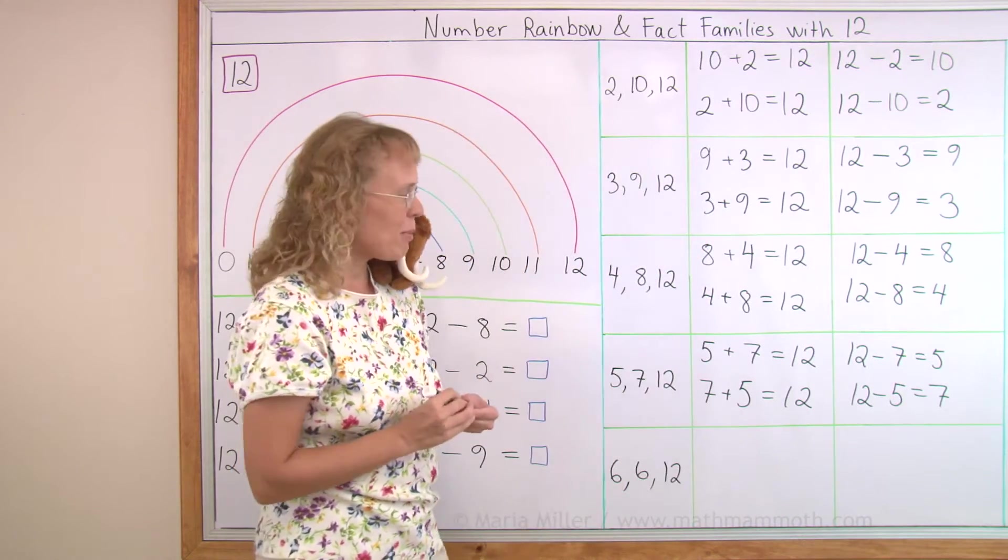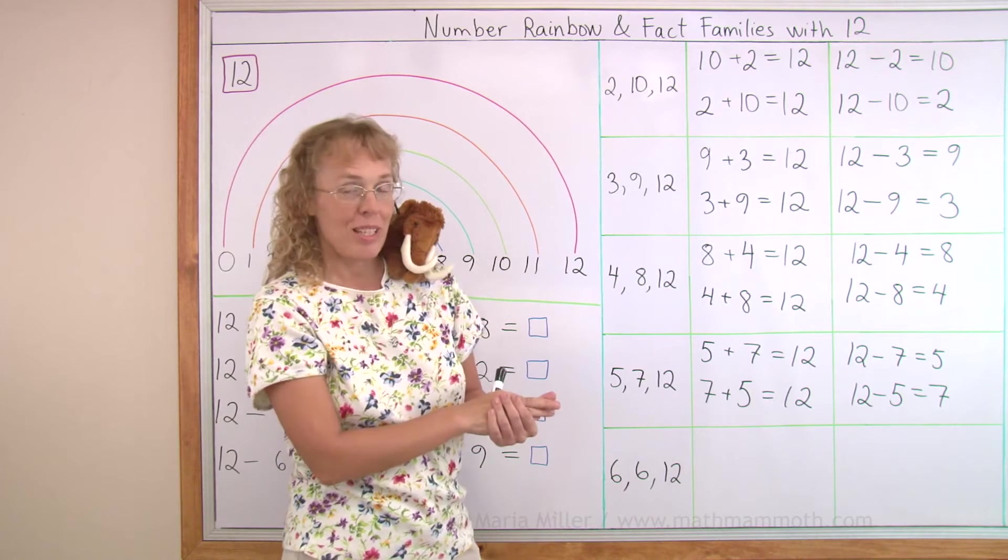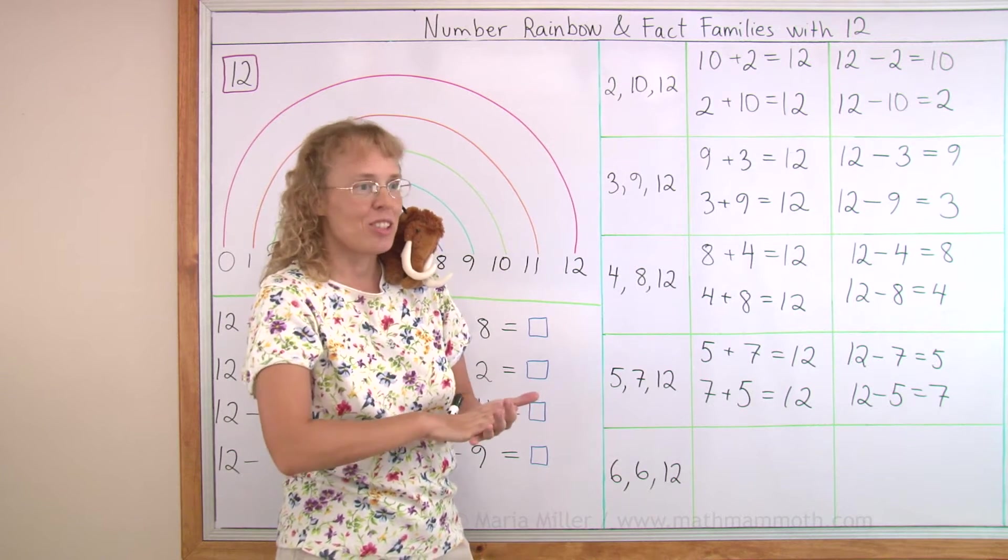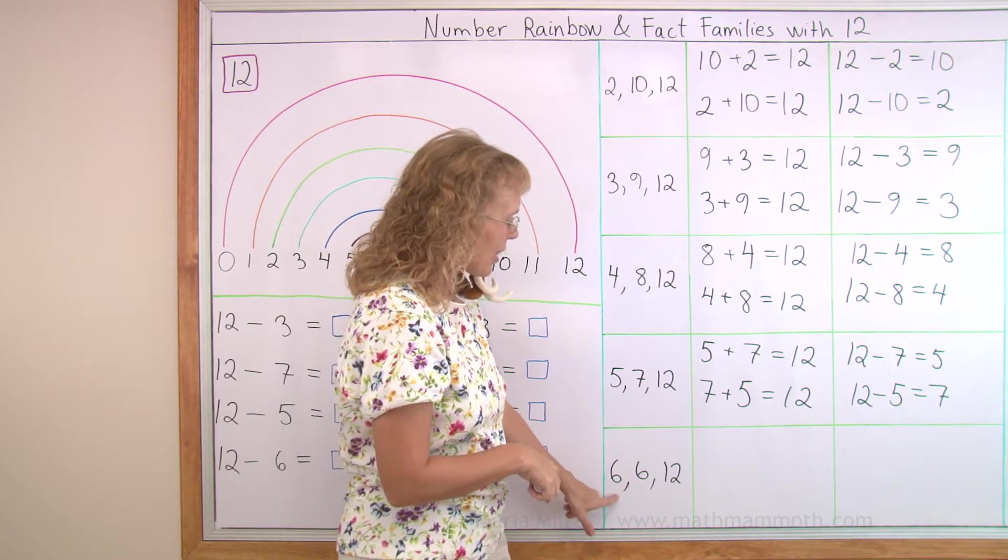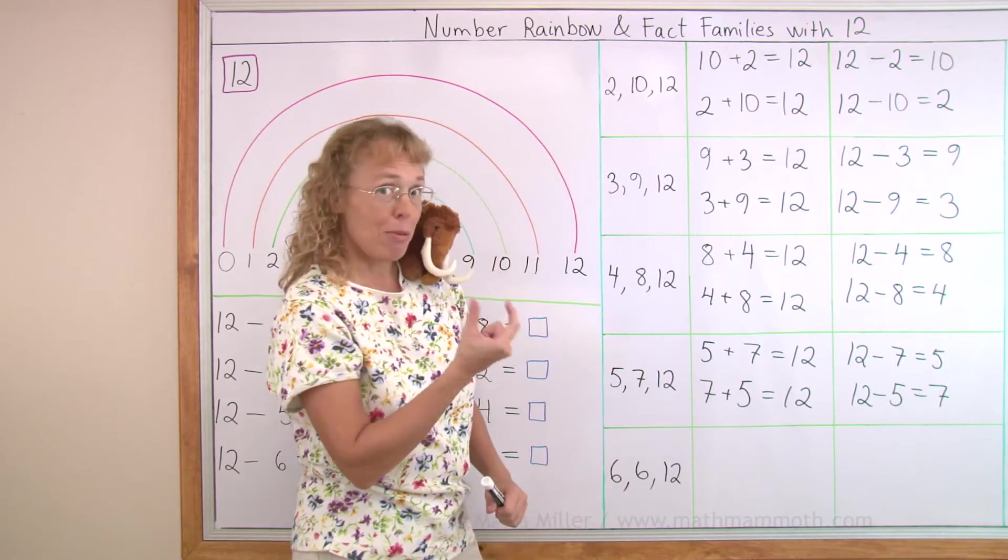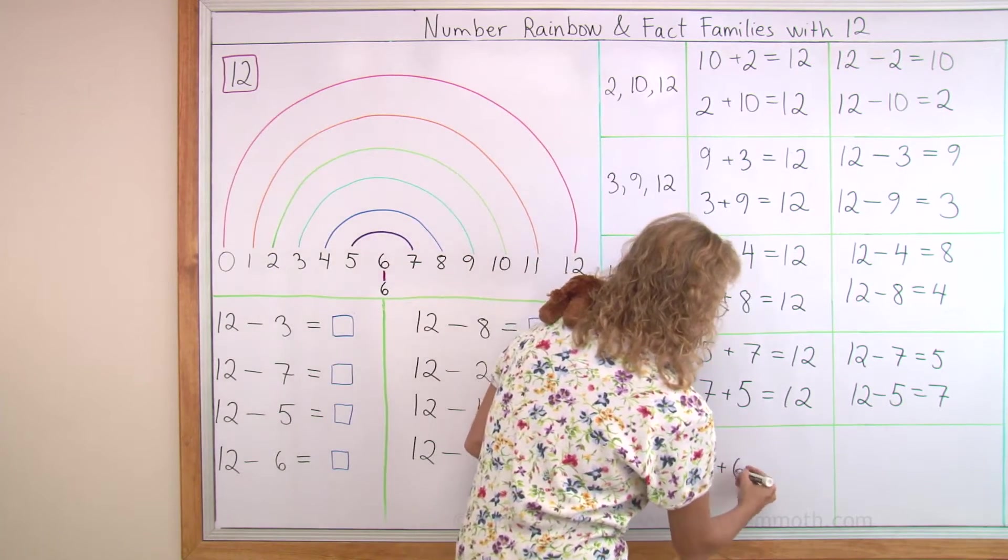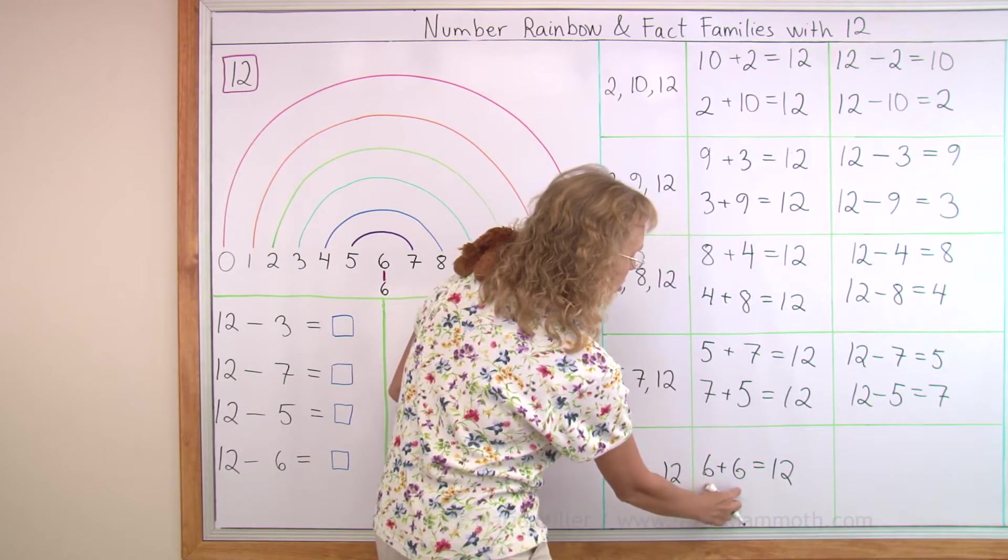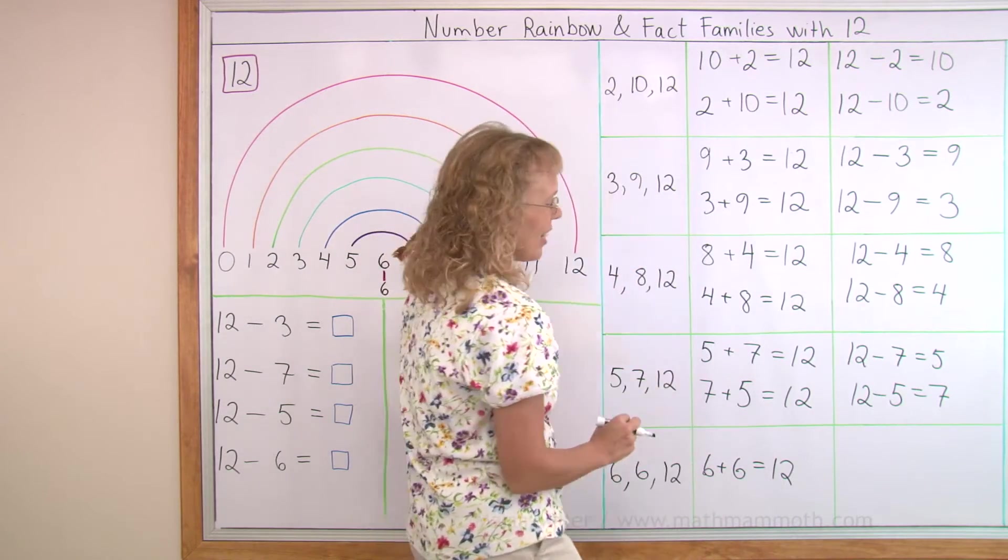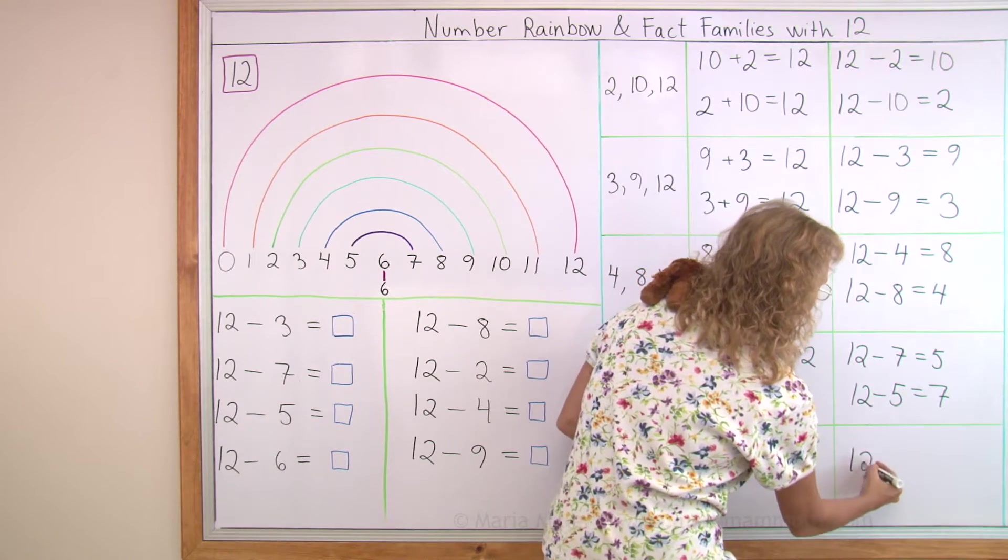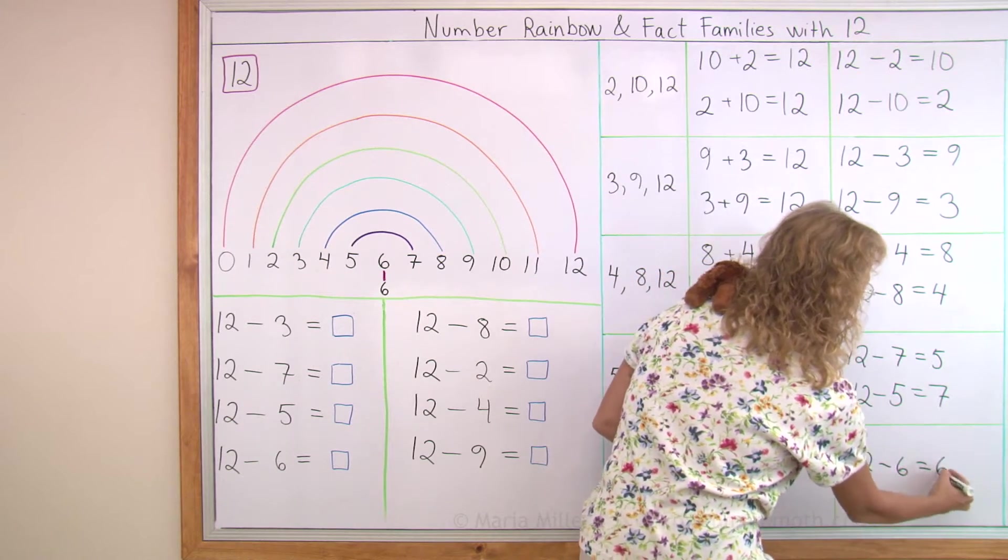Lastly, this last fact family doesn't have as many members, as many additions and subtractions, because with 6 and 6, I will write one addition only. 6 plus 6 equals 12. If I switch these two, I would get the same, right? And then only one subtraction. 12 minus 6 equals 6.